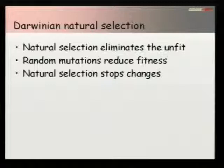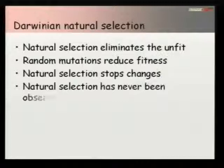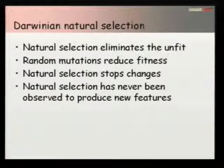Natural selection is a real effect that we can measure and understand. Natural selection eliminates the unfit — if you're not fit to survive, you get eliminated in the natural world. When we talk about human beings, we protect our weaker members so they don't get wiped out. But if you're a moth living on a tree, it's nature red in tooth and claw. Random mutations generally reduce fitness, and natural selection, by eliminating the unfit, will tend to stop changes. The one thing natural selection has never actually been demonstrated to do is produce new features — and the peppered moth is probably quite a good example of natural selection causing changes in gene frequency.